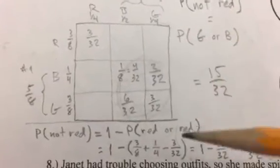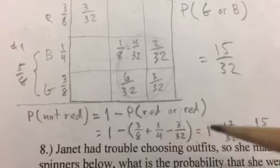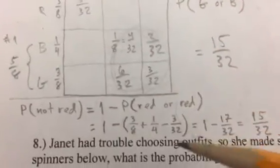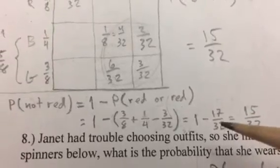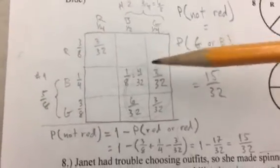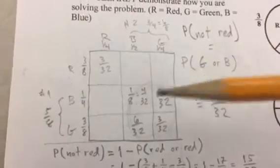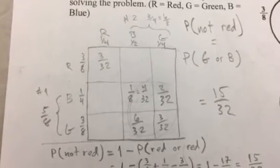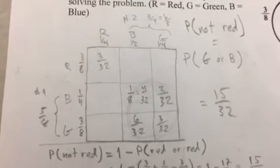So I don't want to get red on the first spin or the second spin. One minus that probability, you can figure that out: three-eighths plus one-fourth minus three thirty-seconds, which is the overlap area there. That all adds up to 17 over 32, and so one minus that is again 15 over 32. I really like the area model—it's a much simpler, more visual way of demonstrating sometimes complicated probability calculations.